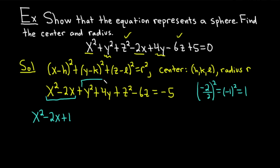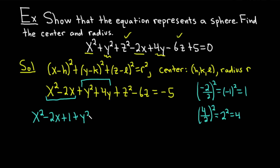Next, focus on y squared plus 4y. Take the coefficient of y, which is 4, divide it by 2, and square it: 4 over 2 squared gives 2 squared, which equals 4. So we add 4 here to the y group. Again, we still need to add this 4 to the other side as well, which we'll do later.